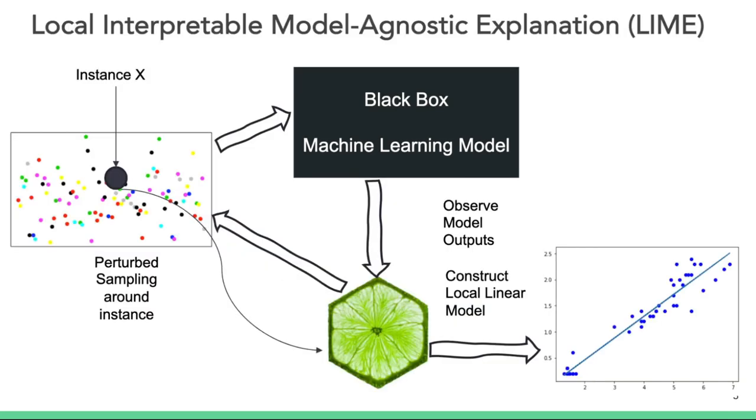LIME stands for Local Interpretable Model Agnostic Explanation. In this slide, let us visually walk through the explanation process of LIME. Since LIME is a model agnostic post-hoc method, it assumes no access to the underlying model.